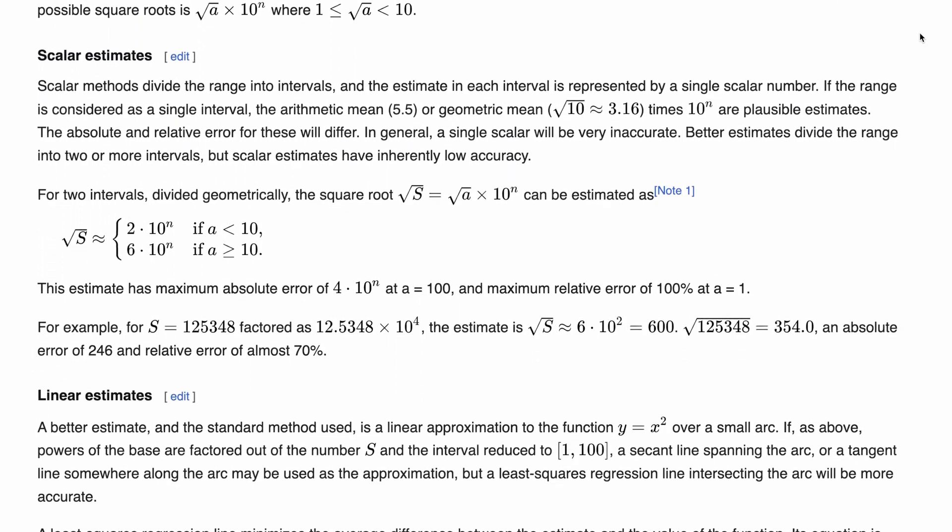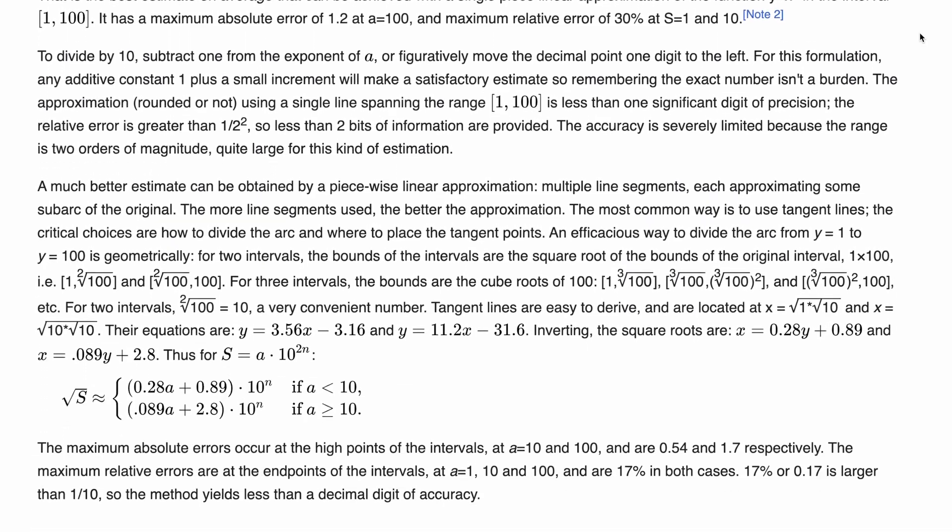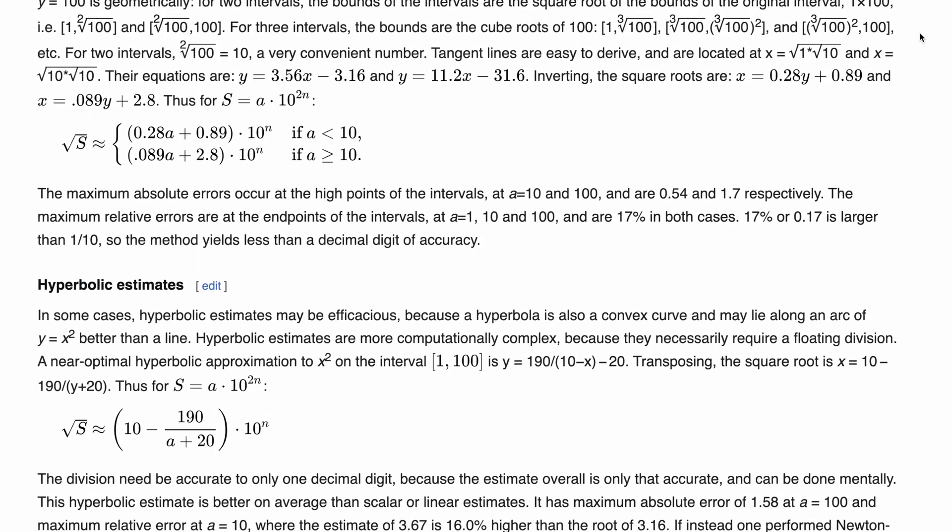Even though the choice of the initial guess is crucial for determination speed, Heron's method is quite robust and is able to converge pretty fast.